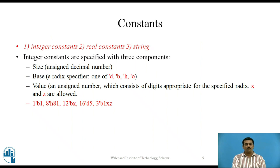Verilog uses three types of constants, namely integer constants, real constants, and string constants. Integer constants are specified with three components. The first is size, which is an unsigned decimal number. The next component is base or a radix specifier. It can be one of four types: 'd for decimal, 'b for binary, 'h for hexadecimal, 'o for octal number. Value is an unsigned number which consists of digits appropriate for the specified radix. In the value part, x and z are also allowed. Here x is an unspecified value and z is high impedance value.